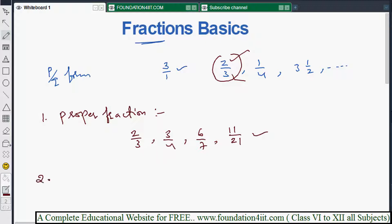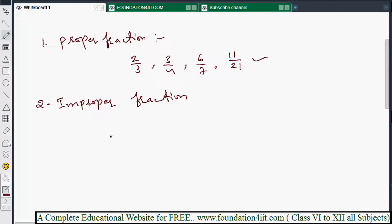Next is improper fraction - just opposite of proper. Means numerator is bigger than denominator. For example, three by two, six by five, twenty by seven. So like this example, numerator is greater than denominator.